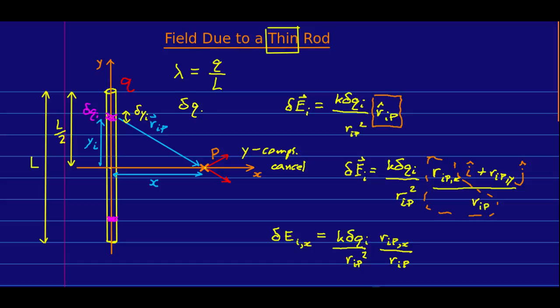And that means that the amount of charge on this little chunk, delta q_i, remember what lambda is. It's a charge per unit length. And we know that the length of this chunk is delta y_i, and so the charge on it must be lambda times delta y_i.